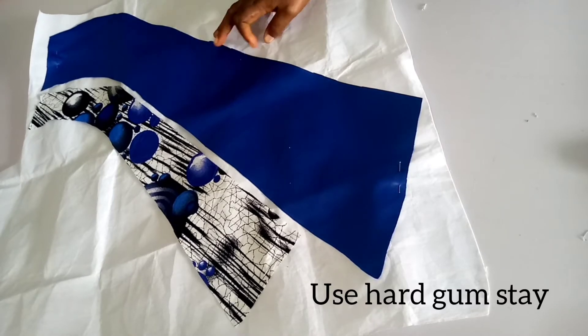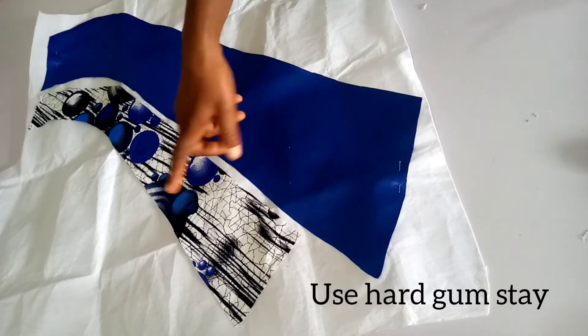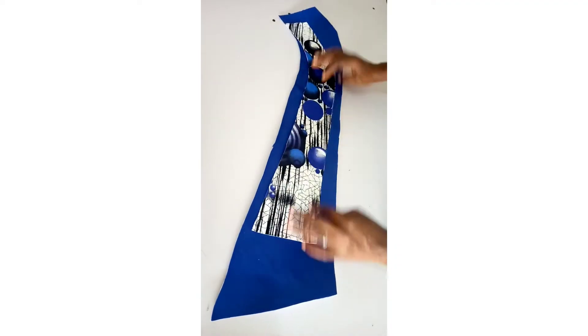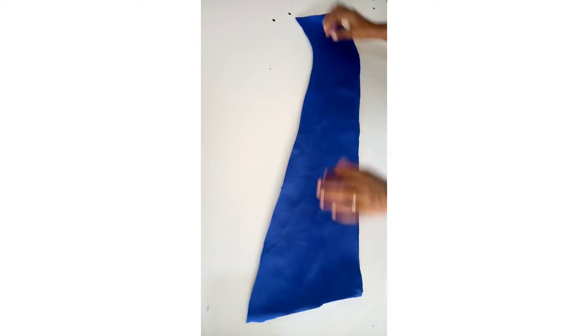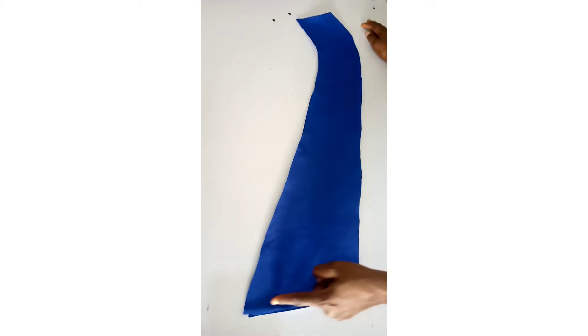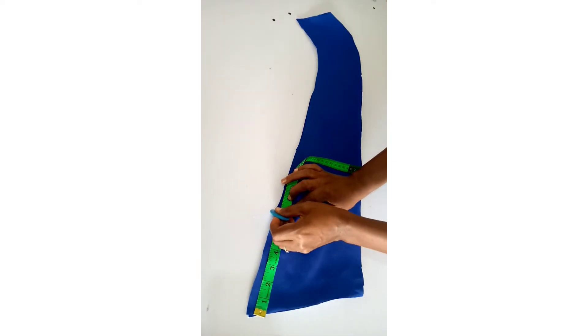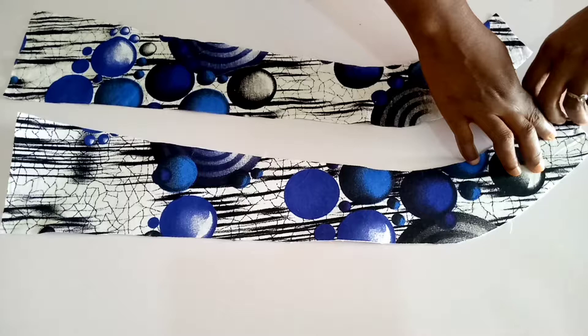Then we are going to cut gum stay and iron at the back side. So you can see. So I am going to place the lining on the big overlap and sew like this. So 6 inch we lift. And sew the 6 inch.